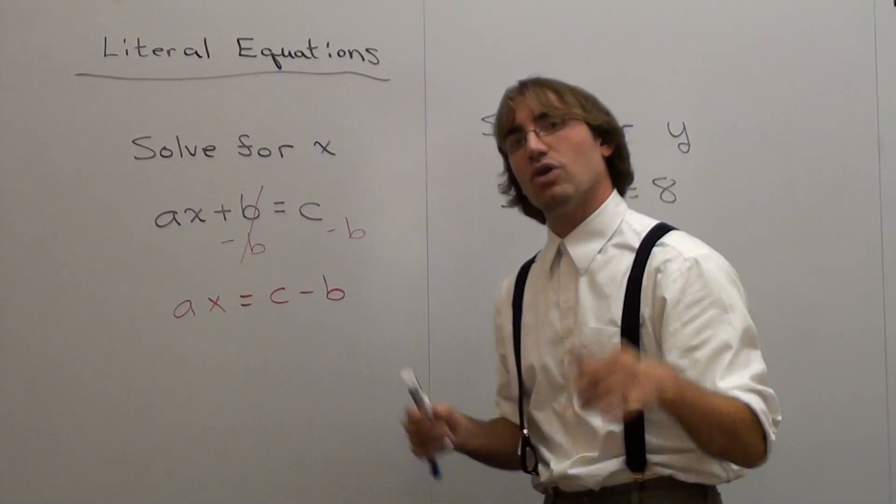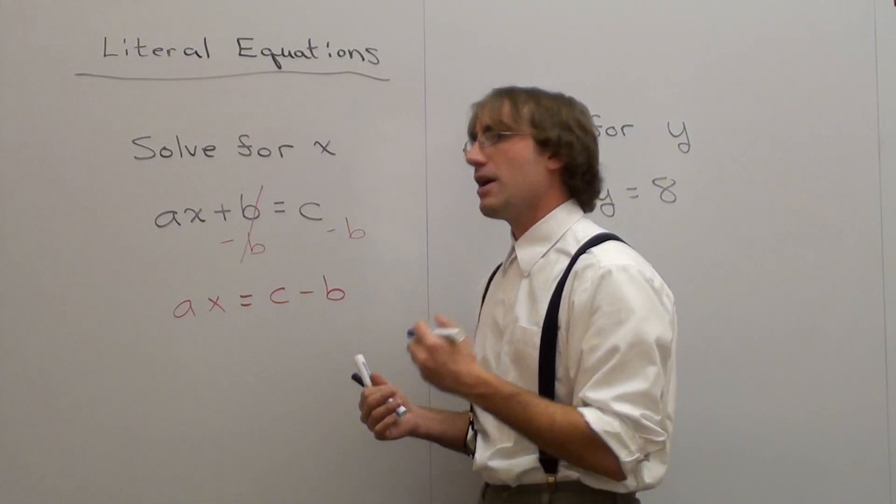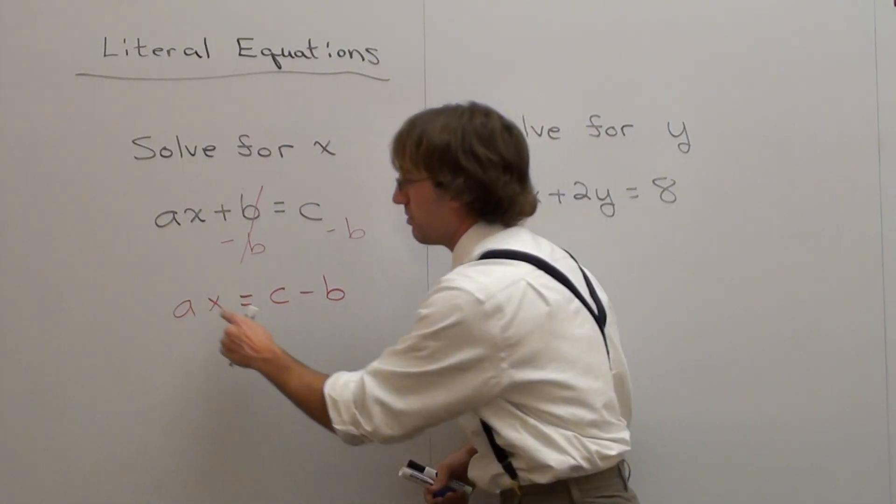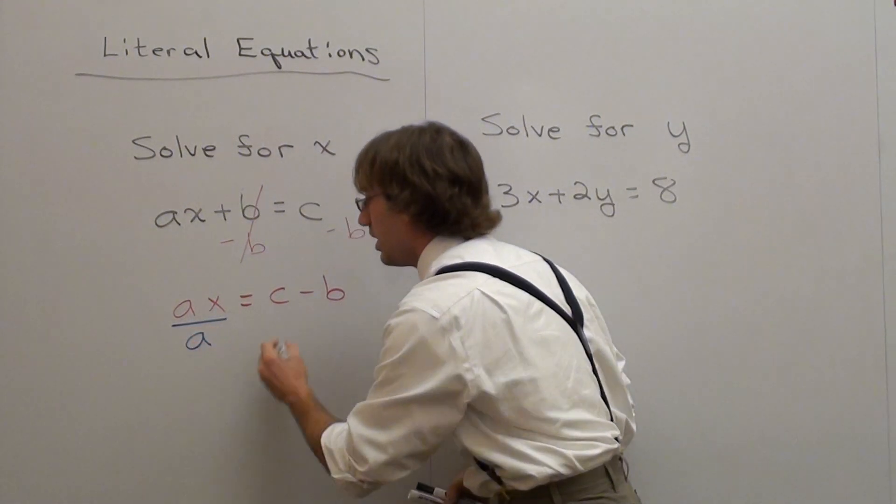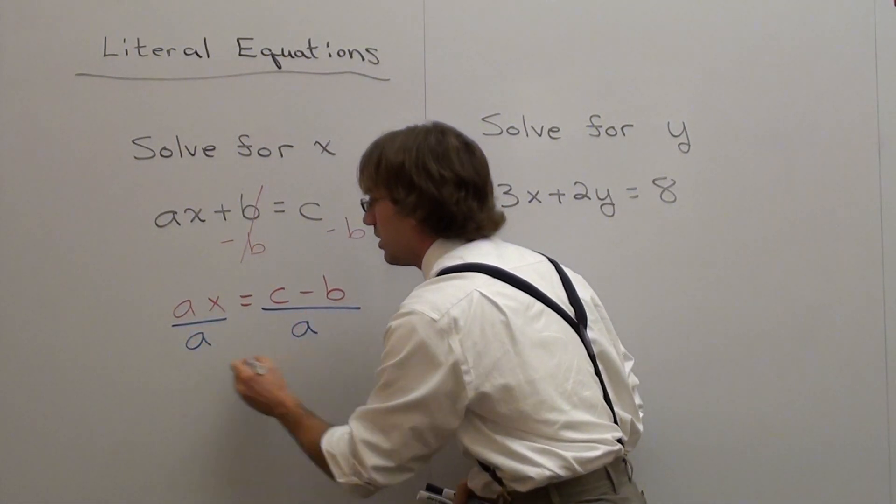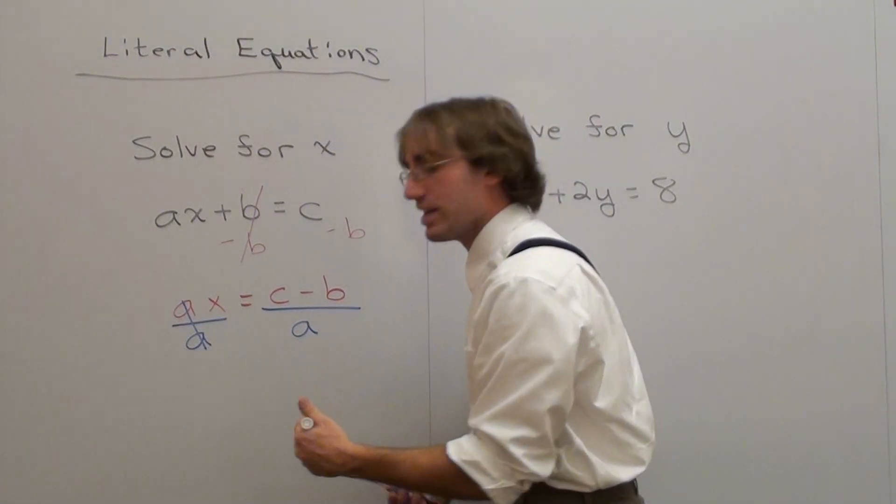I have ax equals c subtracted b. What do I want to solve for? What do I want to get by itself? x, okay? Divide by a, because there's a multiplication in between there. What I do on one, I do on the other.